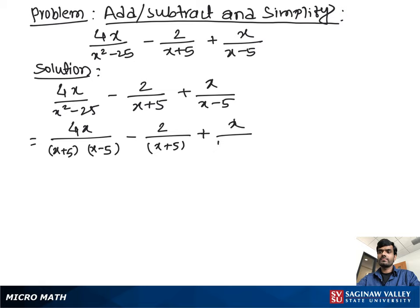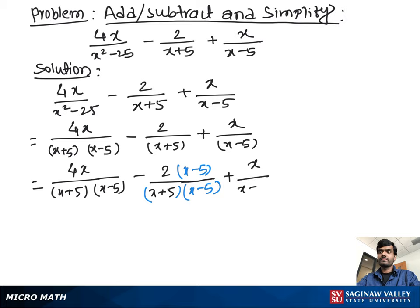Now our first work is to make each term's denominator the same. For the first term, we do nothing because it has both x plus 5 and x minus 5 terms. But for the second term, we multiply both numerator and denominator with x minus 5. For the third term, we multiply x plus 5 with both numerator and denominator to make each term have the same denominator. As you see, each term has x plus 5, x minus 5 as denominator. We take this as the lowest common denominator.